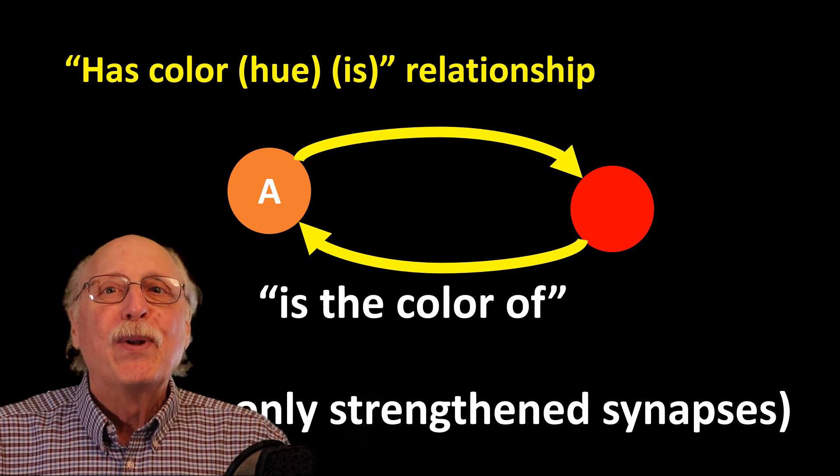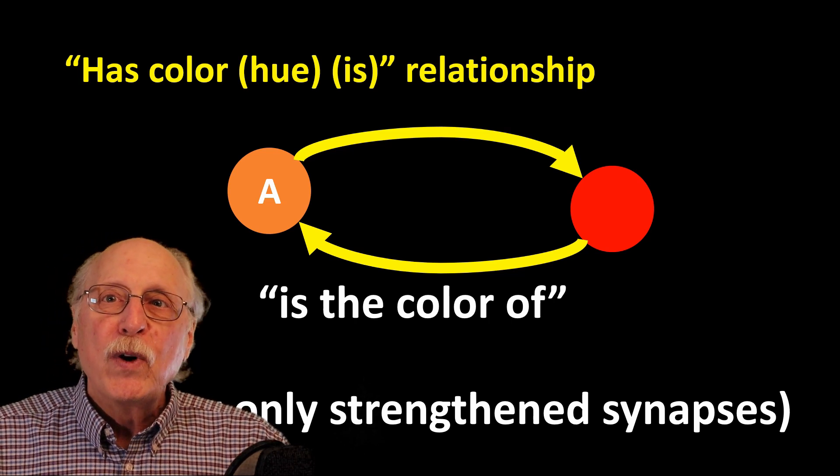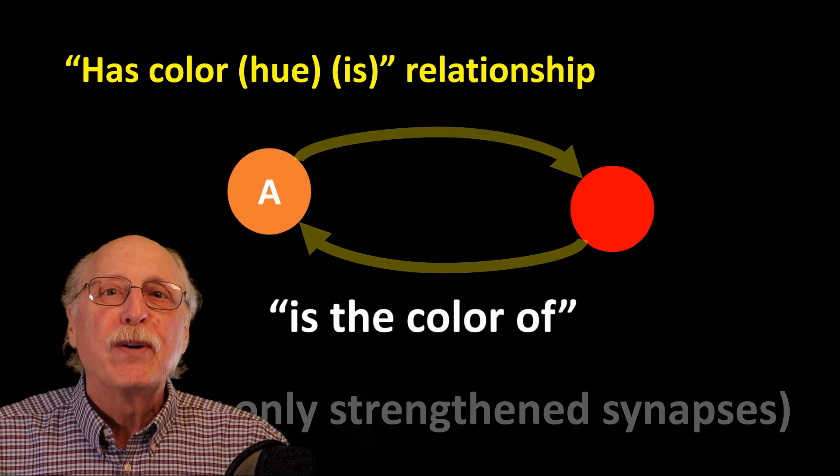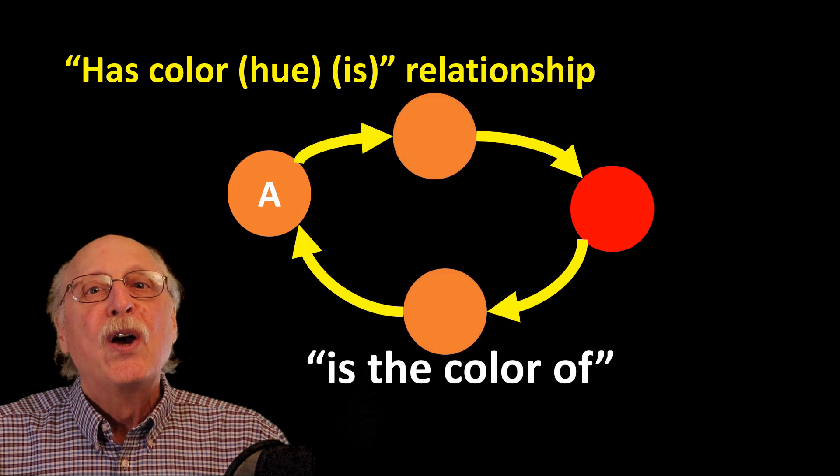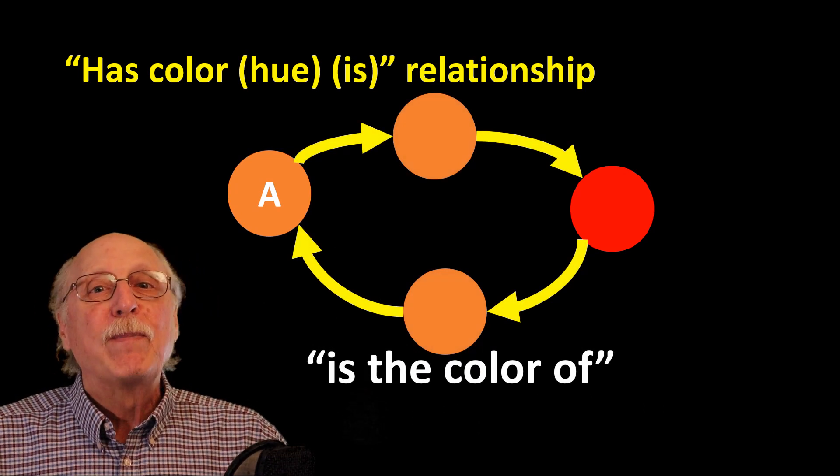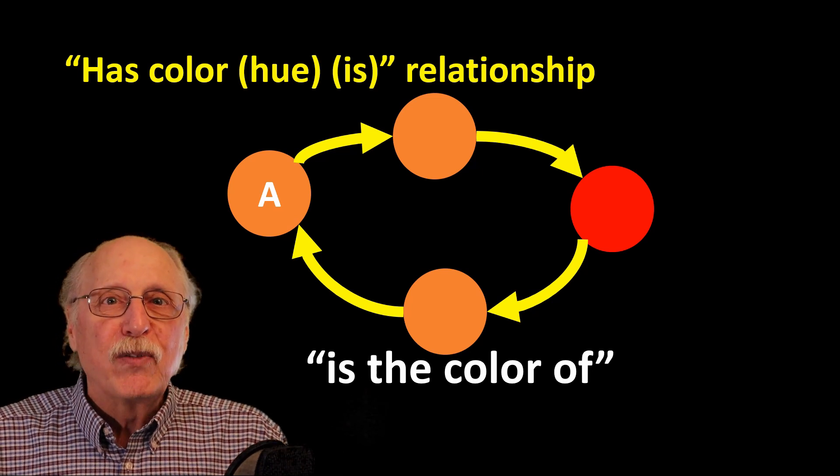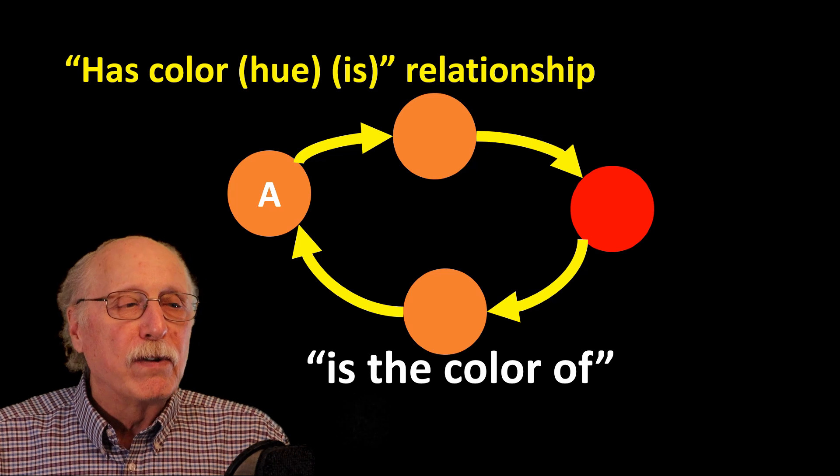Of course, it's still not that simple. In order to differentiate which relationship is which, there must be additional neurons—one representing the relationship going forwards, one representing its inverse, and this was described in greater detail in the video on the Universal Knowledge Store.